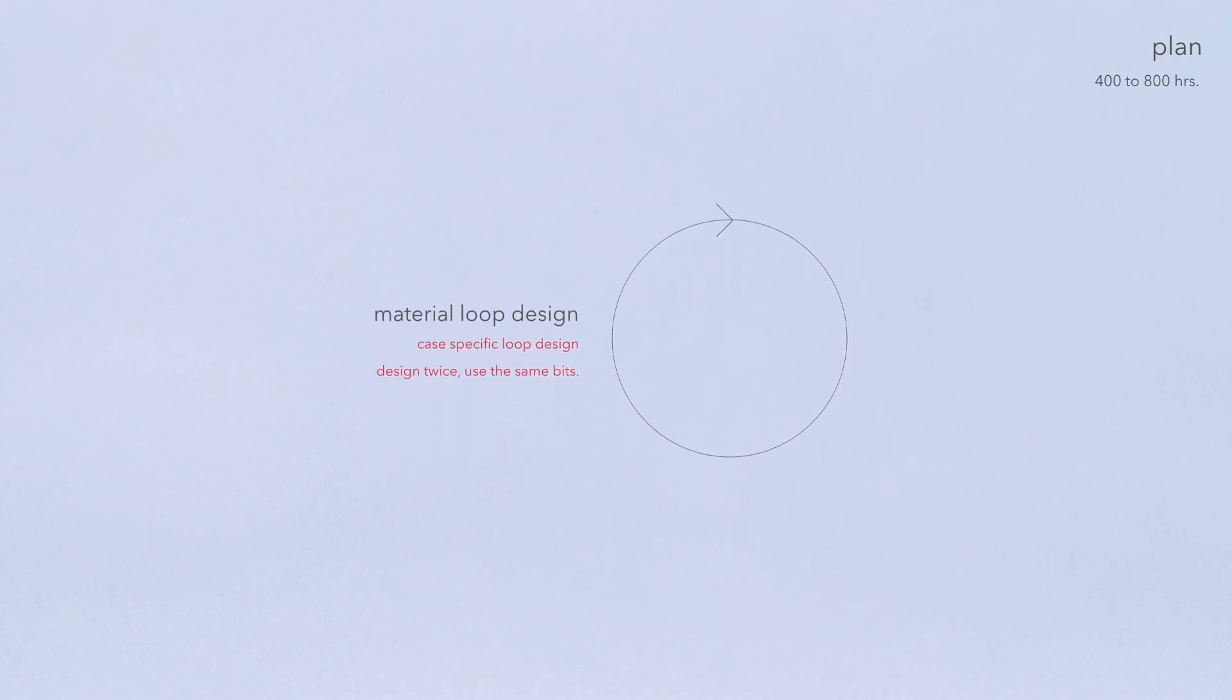This process will form a design investigation loop, where any changes to one building will directly affect the other. The series of tests documented here today will form the basis of this loop design process.